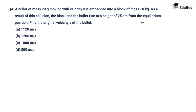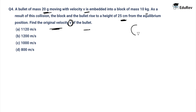Question number 4: A bullet of mass 20 grams is moving with velocity V and is embedded into a block of mass 10 kg. As a result of this collision, the block and the bullet rise to a height of 25 centimeters from the equilibrium position. We need to find the original velocity V of the bullet. Initially, the bullet is separate from the block; after collision, the bullet is inside the block.